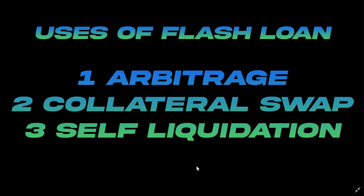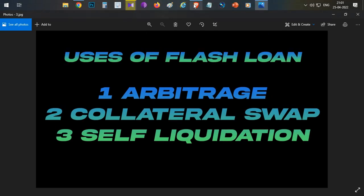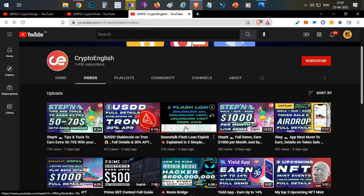The third and most useful use case is self-liquidation. For example, say you have kept a collateral of $120 and borrowed $100. Due to price fluctuation your position is about to be liquidated. To avoid liquidation you need to repay that $100 USDT, but if you don't have the funds you can use a flash loan — borrow the USDT, repay your loan, take back your collateral, swap it back to USDT, and repay the flash loan.